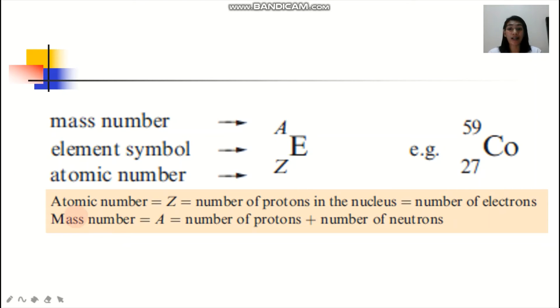The atomic number is actually represented by Z. It also represents the number of protons in the nucleus, and it also represents the number of electrons. Dapat balance yung number ng protons and number of electrons para neutral ang charge niya. Now, the mass number is the number of protons and neutrons. The number of protons and neutrons would give you the total mass of your element.